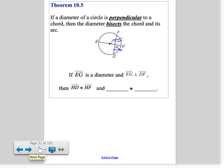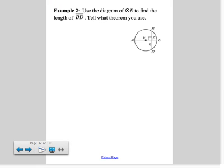So if EG is a diameter and EG is perpendicular to DF, then HD is congruent to HF, and arc DG is congruent to arc FG. That's exactly what I just marked in the diagram.